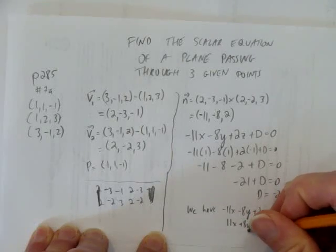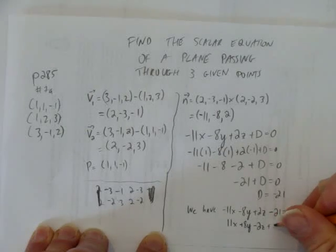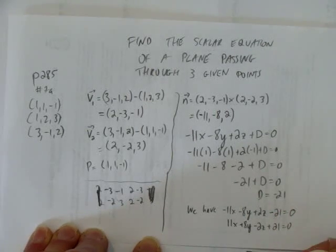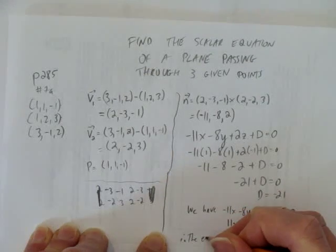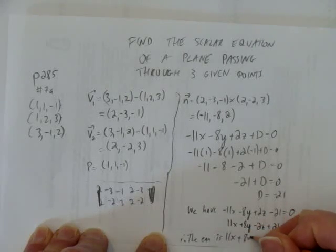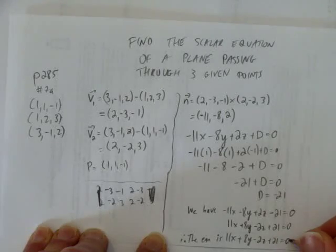So, we times each coefficient by negative 1. Or, if you want to think about it this way, we flip all the coefficients. And so, we have, therefore, the equation is 11x + 8y - 2z + 21 equals 0.